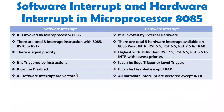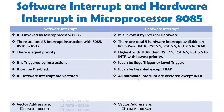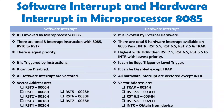Regarding memory locations: all software interrupt instructions are vectored, meaning all instructions transfer control of the program to well-defined memory locations. For hardware interrupts, all pins other than INTR have vectored addresses. Let us see what those locations are — for RST0 to RST7, each instruction execution goes to a well-defined memory location.